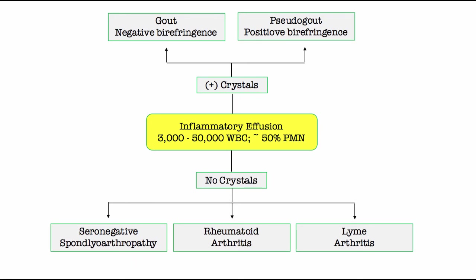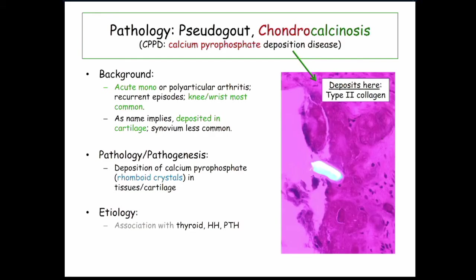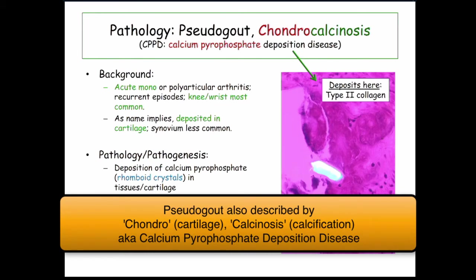With this background, we can now launch into a brief discussion of pseudogout. Pseudogout is quite a bit less exciting. The name is good because it means it presents like gout, but the name doesn't tell you the pathway — chondrocalcinosis, calcium pyrophosphate deposition disease.